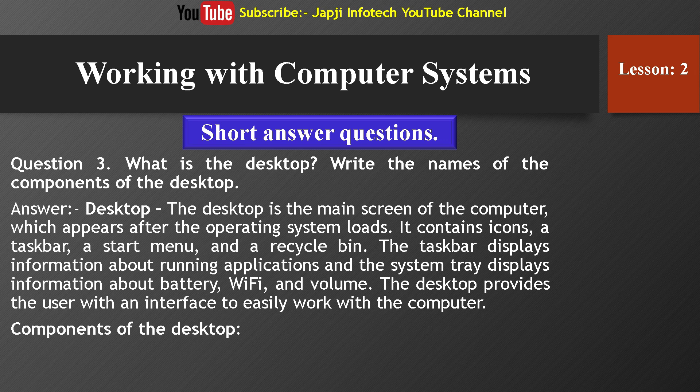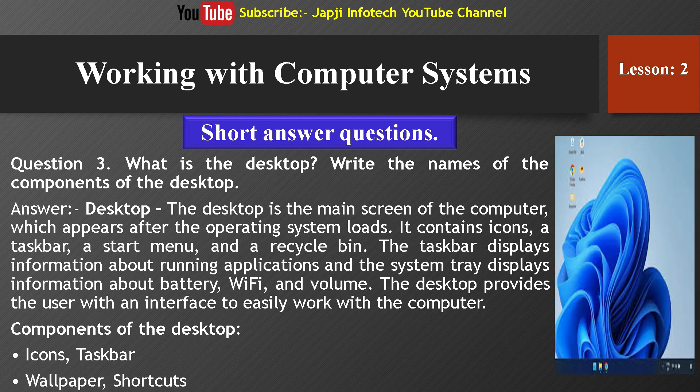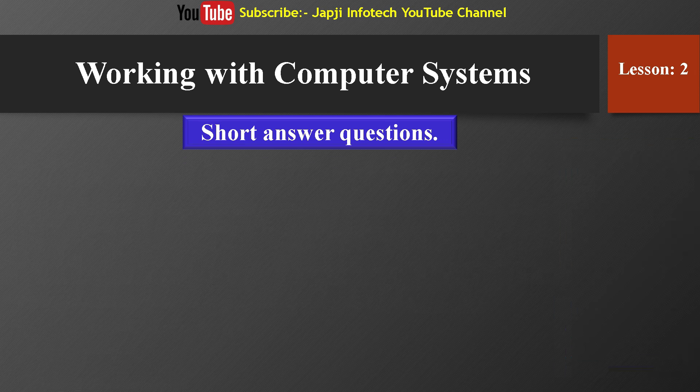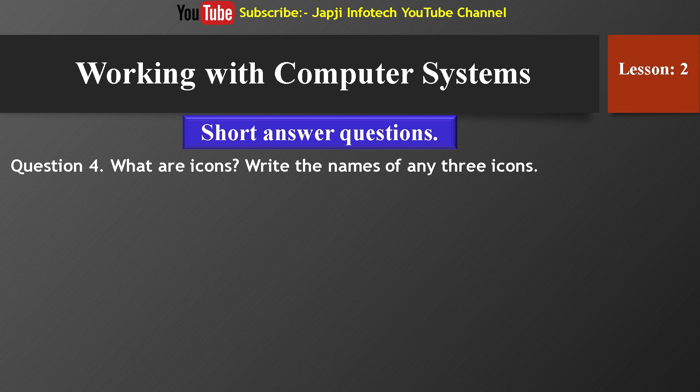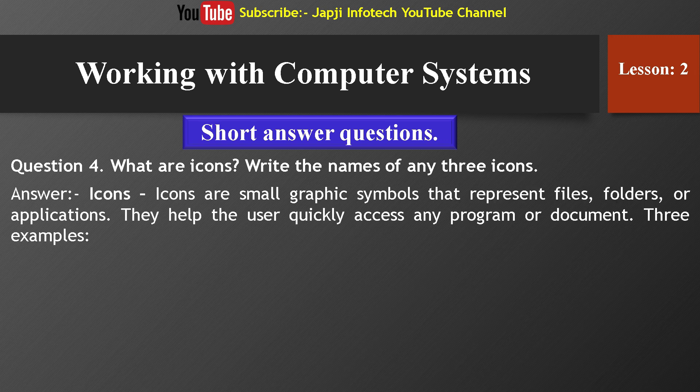The components of the desktop are: icons, taskbar, wallpaper, and shortcuts. Fourth question: What are icons? Write the names of any three icons. Icons are small graphic symbols that represent files, folders, or applications. They help the user quickly access any kind of document.